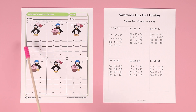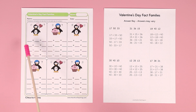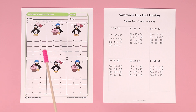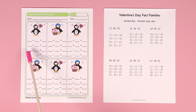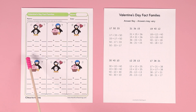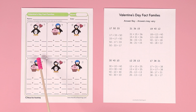Then you flip the addends around and start with 33: 33 plus 17 equals 50. Then you work on the subtraction problems. You take the answer of the addition problem, which is 50, and start with that — always start with the biggest number for subtraction. So: 50 minus 17 equals 33, and 50 minus 33 equals 17.